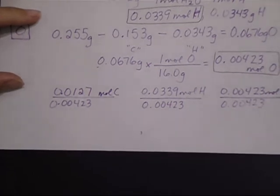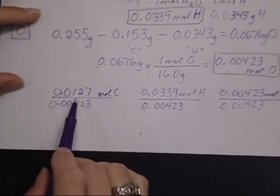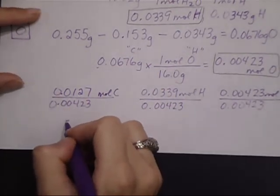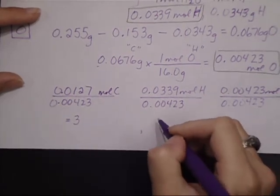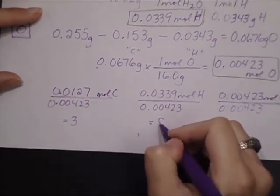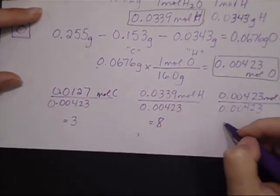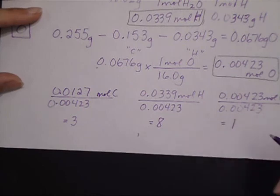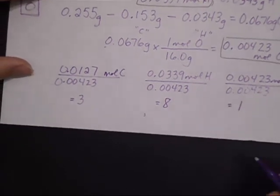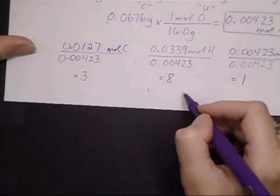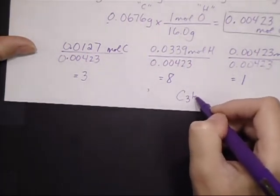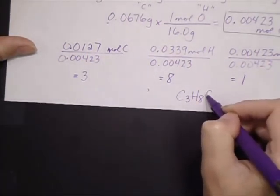Okay, so what I end up with then is when I divide these values out, I get 3 for the carbon, 8 for the hydrogen, and of course, 1 for the oxygen. So then my formula becomes C3H8O.